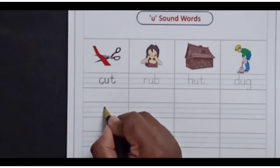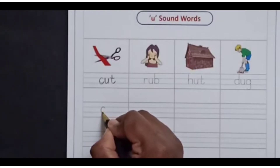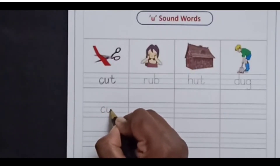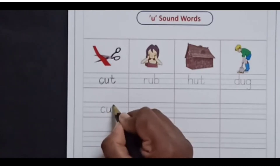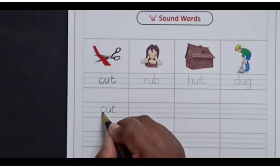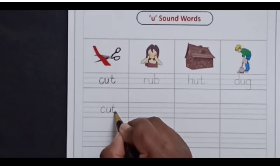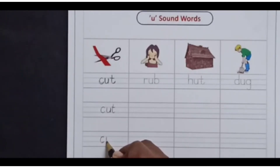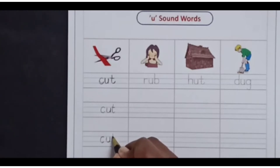The sound of C is K, the sound of U is A, and the sound of T is T. K-U-T, cut. C-U-T, cut.